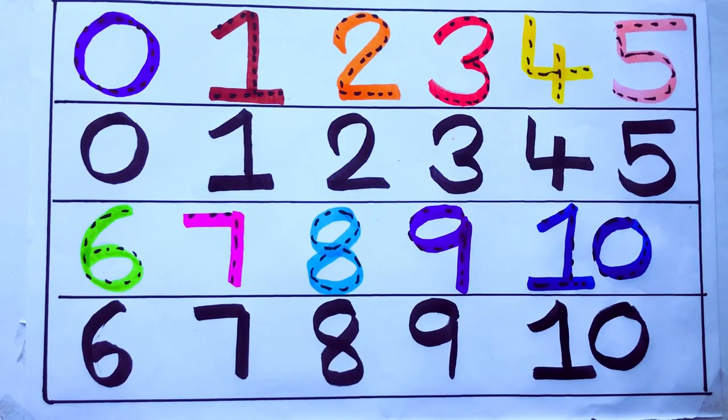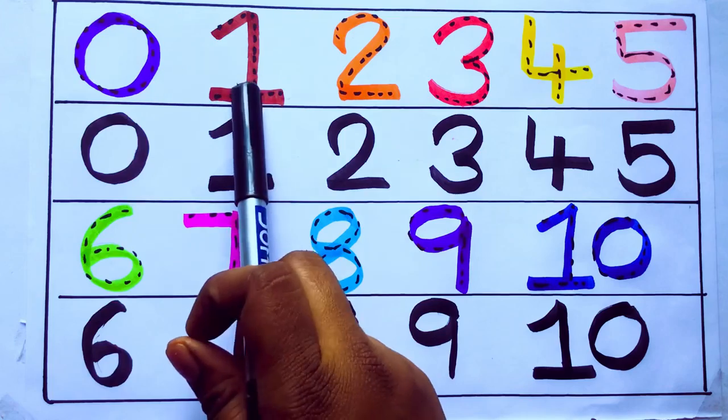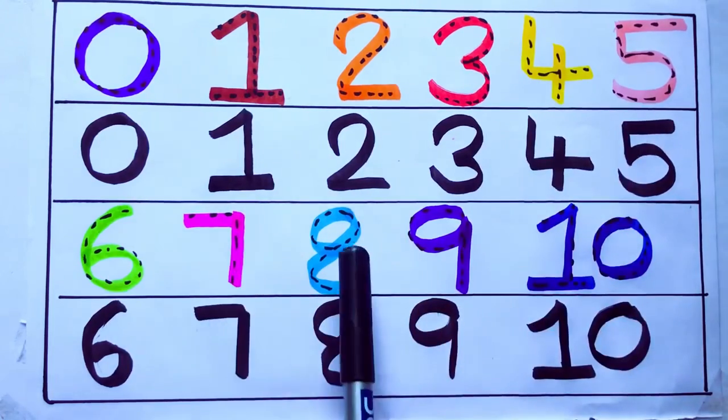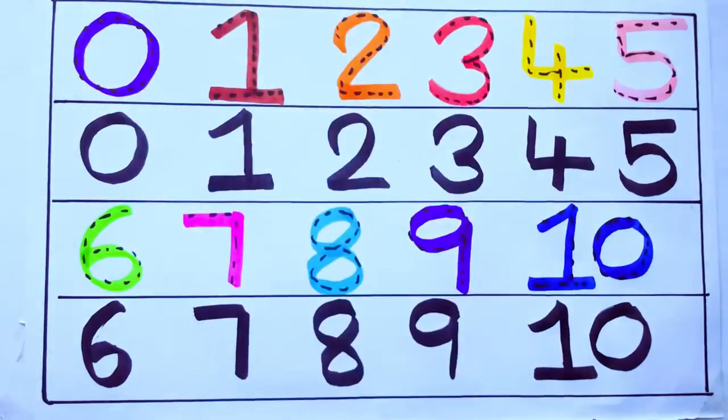Let's count the numbers: 0, 1, 2, 3, 4, 5, 6, 7, 8, 9, 10. Okay. Bye kids.